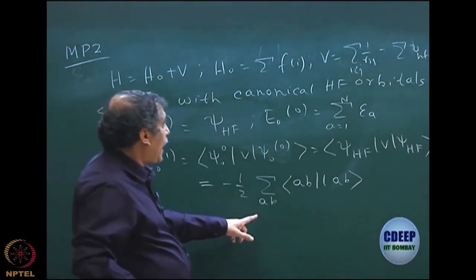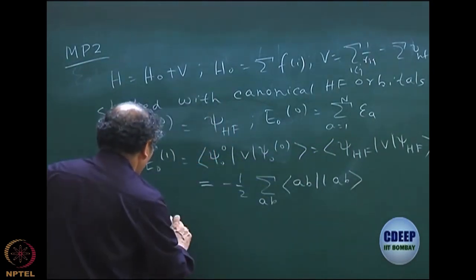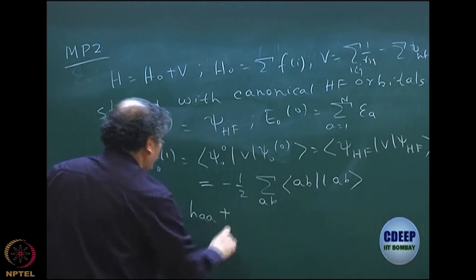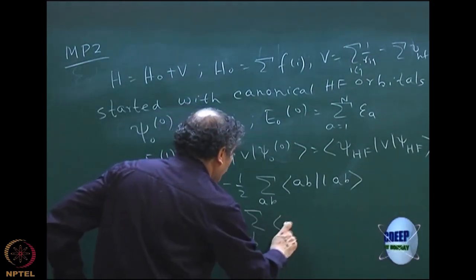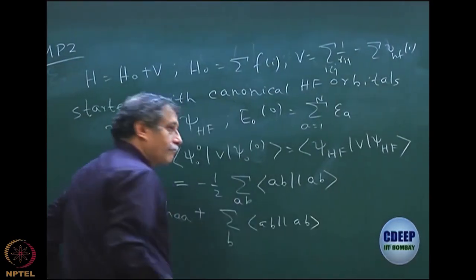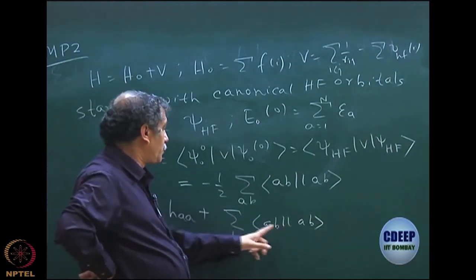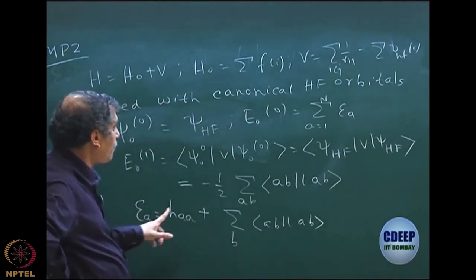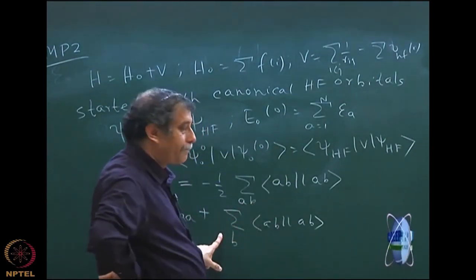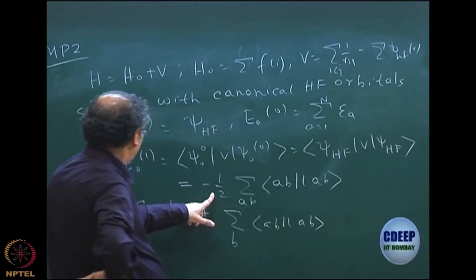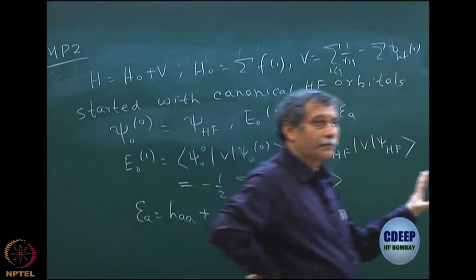So, minus one-half: if you add this to the orbital energy, you get the total Hartree-Fock energy. The orbital energy εₐ equals Hₐₐ plus the sum over B of ⟨AB‖AB⟩ in terms of spin orbitals. When you sum the orbital energies and add the first-order perturbation correction, you get one-half ⟨AB‖AB⟩, which gives you the Hartree-Fock energy.